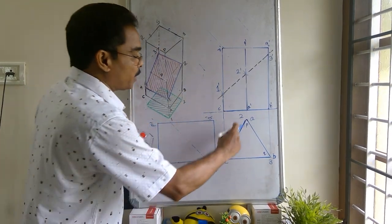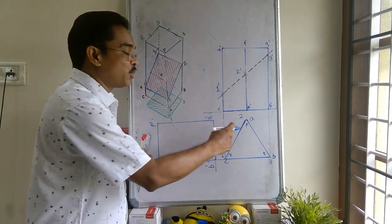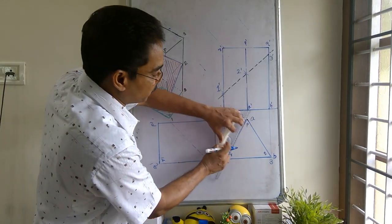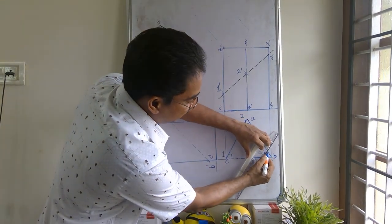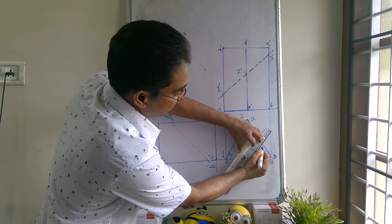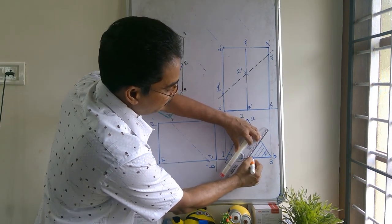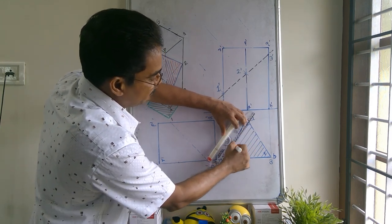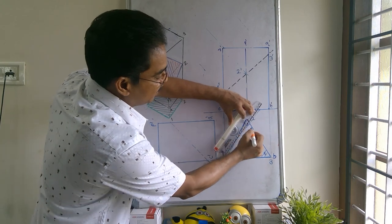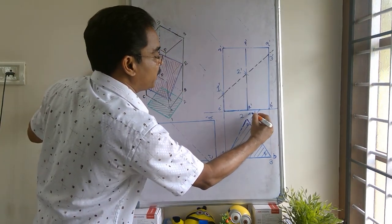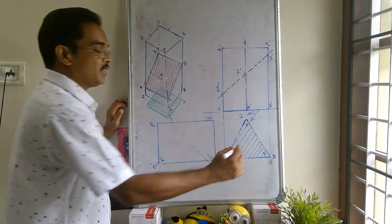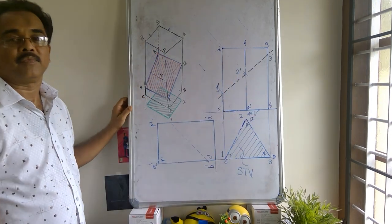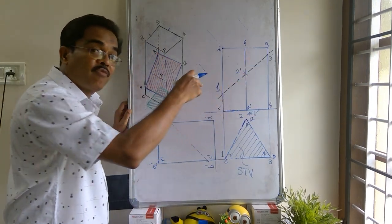And this one, two, three will form the sectional top view of the cut surface. And this sectional top view will be usually represented with hatching lines, the angle of hatching may be 45 degree to the nearest reference line. So this is your sectional top view, and this is your sectional front view.